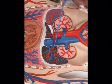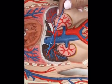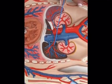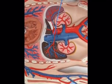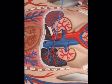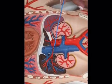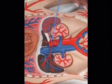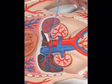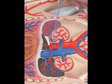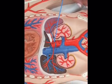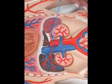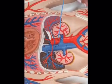Everything that's inside the liver is supplied by the hepatic artery proper. Before it branches, it's called the common hepatic artery. So this is the first unpaired branch off of the abdominal aorta.